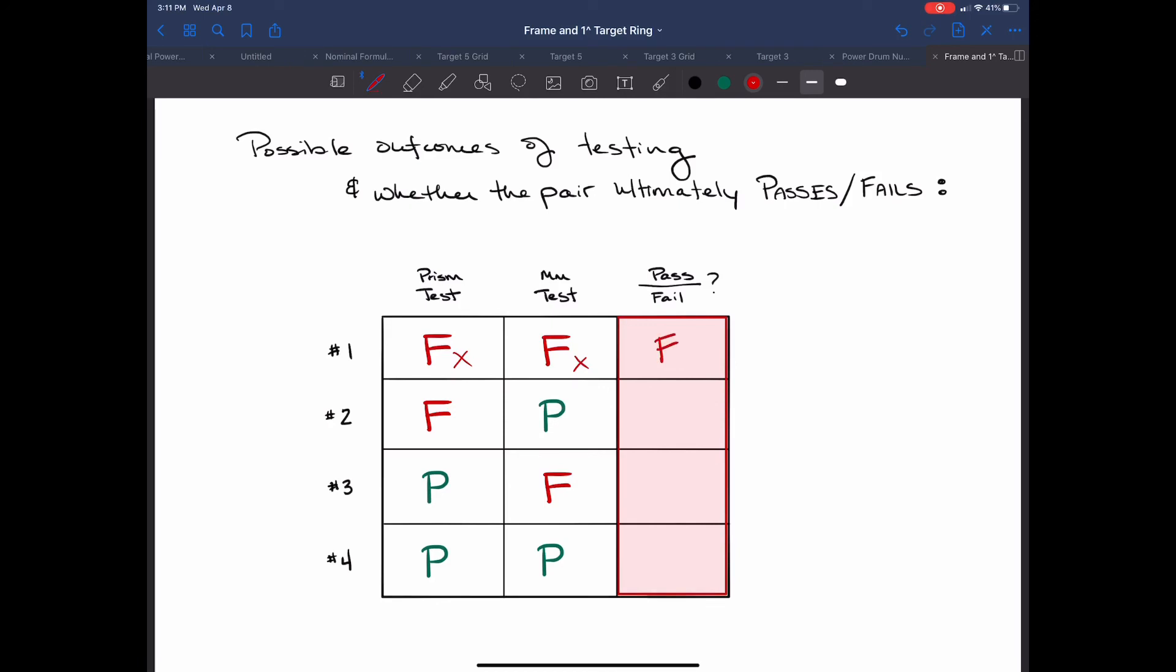If on another pair we failed the prism test but we passed the millimeter test then this pair would ultimately pass. If the prism test is passed but the millimeter test fails then this pair still will ultimately pass. If the pair passes the prism test and the millimeter test of course it passes. So the only time that the pair will fail is if both prism test and millimeter test fail.